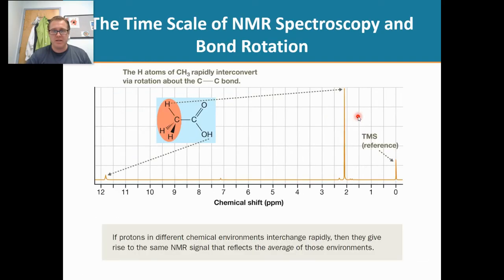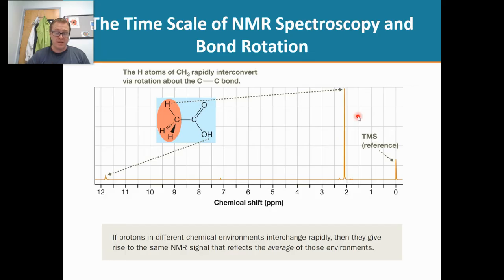And that same concept applies to something that we've already discussed, that is methyl hydrogens. We can see in this snapshot in time, if we could freeze time, we see that this hydrogen is close to that oxygen whereas this hydrogen is not as close to that oxygen. So why do we get just one signal?